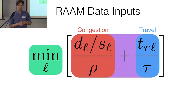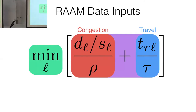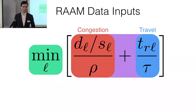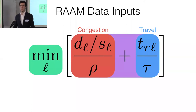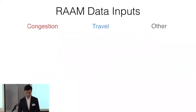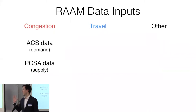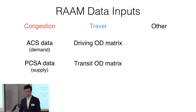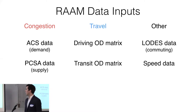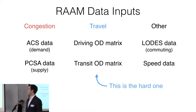Jamie talked about the model; I'm going to talk about the methods. Any sort of access model is likely going to require large OD matrices. In our case we wanted to do it for the entire country. We have to calculate the congestion cost — just demand and supply from ACS data and primary care service area data — and the OD matrices, which are the real challenge here to do at the national scale.